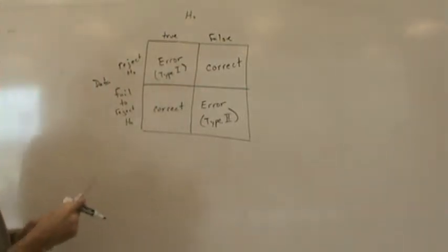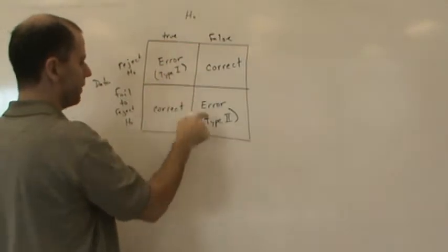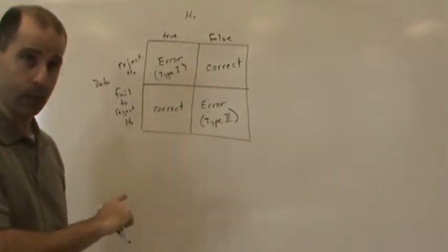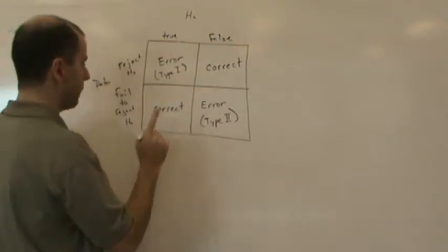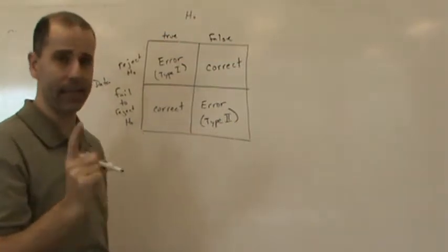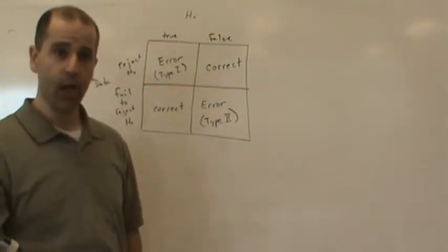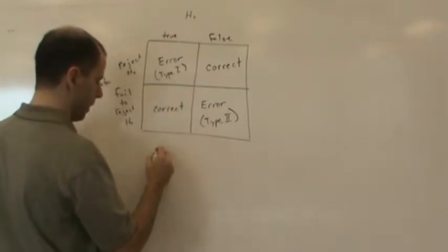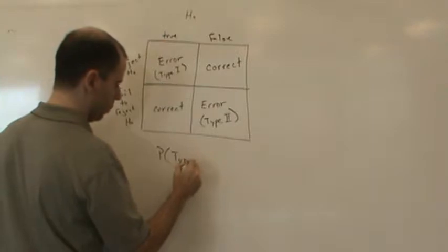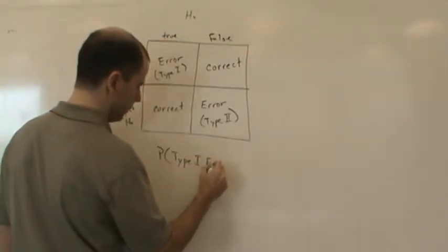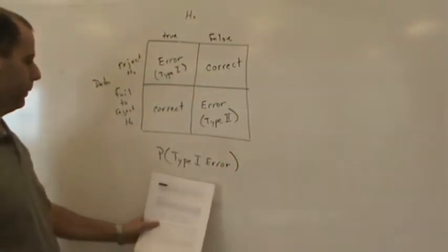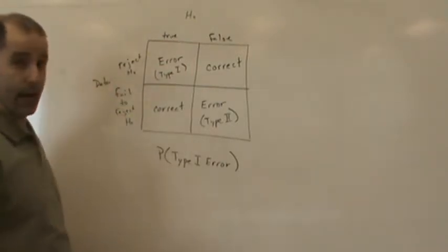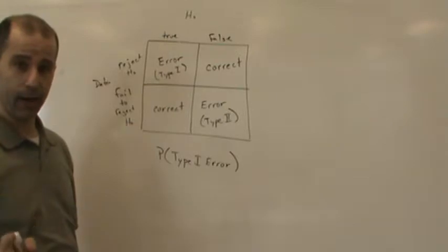Now let's define what Type I and Type II errors represent statistically in hypothesis testing. We don't want to make either type of error, so we want the probability of making those errors to be small. The probability of making a Type I error — that is, rejecting the null when it is actually true — is something we want to keep small.